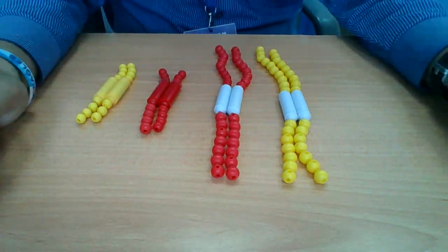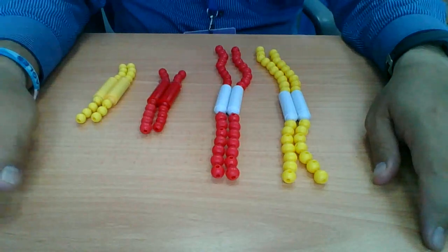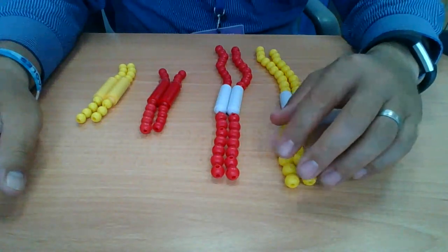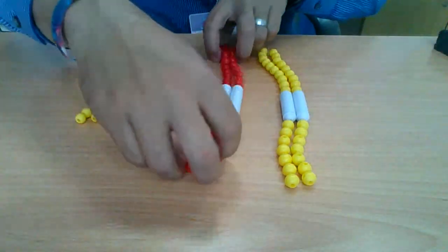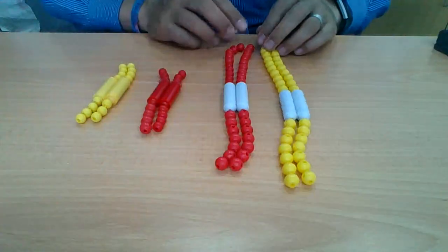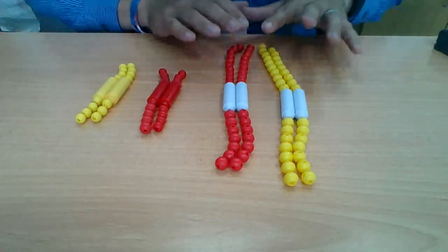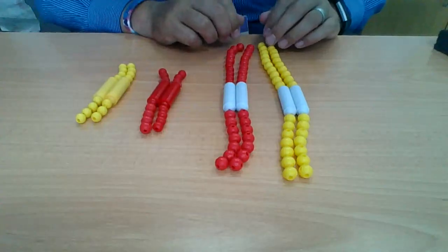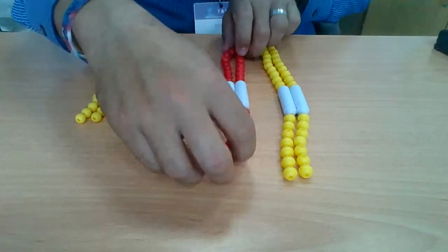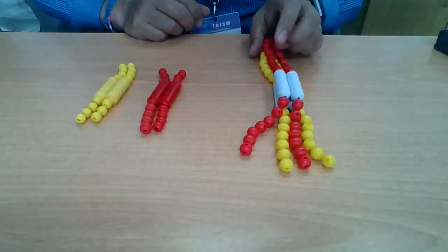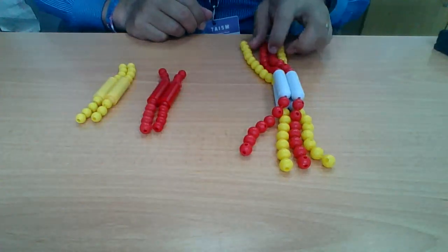In humans, this is in the testes and ovaries. Here's where the first difference happens. In meiosis, the homologous chromosomes, that means the chromosomes that are the same size and that have the same genes, they may have different forms of the genes, different alleles, the same genes, are going to form tetrads. They're going to pair up. This is called synapsis.